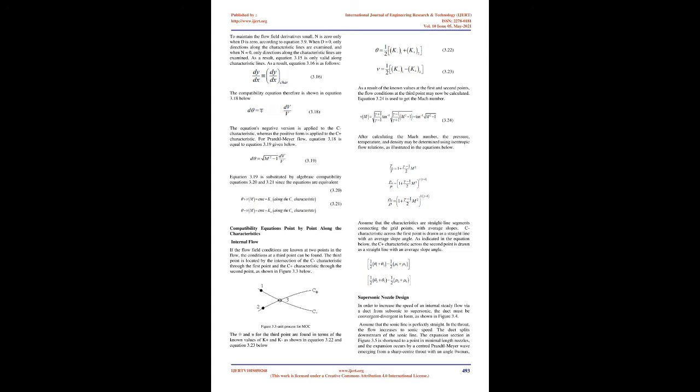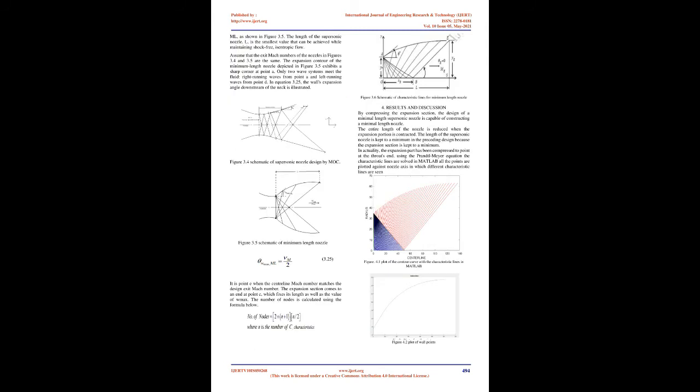The following are the three properties of characteristics. Property 1: a curve or line in a two-dimensional supersonic flow along which physical disturbances propagate at the local speed of sound relative to the gas is a characteristic. Property 2: a characteristic is a curve along which the flow qualities are continuous, even though the initial derivatives are discontinuous, and the derivatives are indefinite. Property 3: a characteristic is a curve that may be used to convert the controlling partial differential equations into an ordinary differential equation.